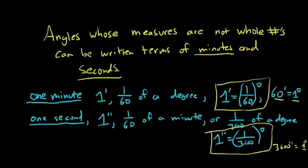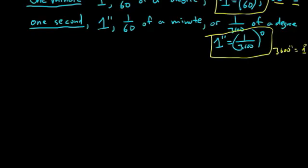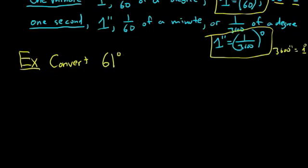Alright, let's go ahead and do a really simple example. So EX means example. The question is to convert 61 degrees 42 minutes and 21 seconds to what's called decimal degrees.